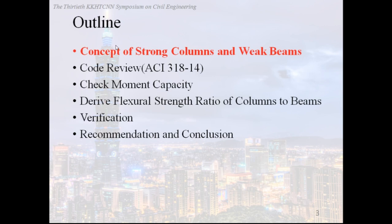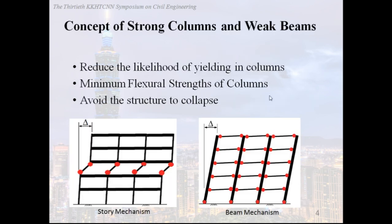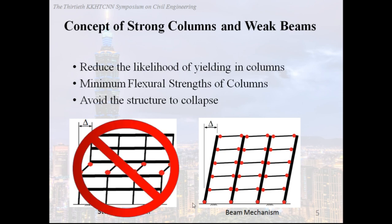First of all, we will explain the concept of strong columns and weak beams. Here there are two patterns of failure mechanism below: the first one is story mechanism, and the second one is beam mechanism. In seismic design, we hope that the structure can have large deformation to dissipate energy but not lead to collapse when the earthquake comes. So the best failure mode of a structure is beam mechanism.